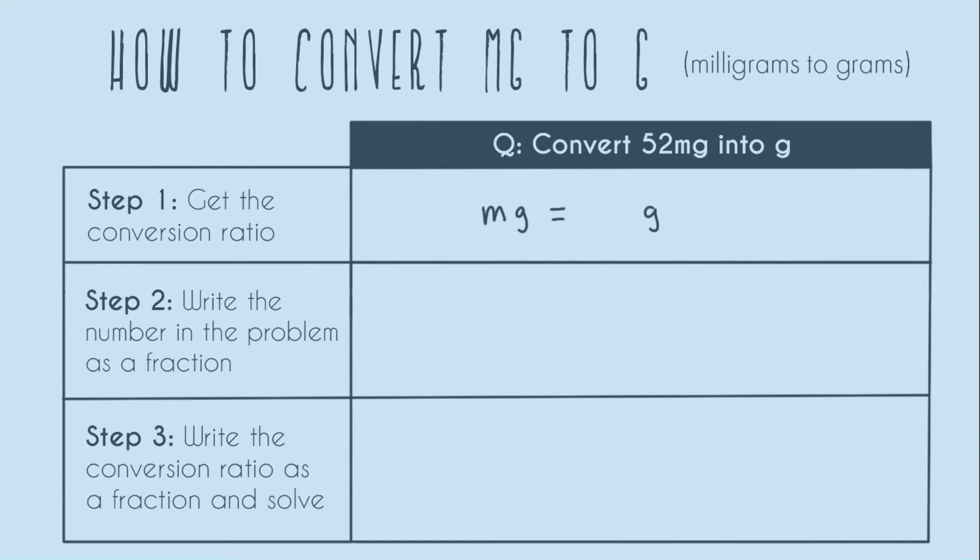And so however you do it, somehow you have to know that for every one gram you have a thousand milligrams. That's what the prefix milli means: you have to have a thousand milligrams, or milli whatever you have, to add up to one of your unit.